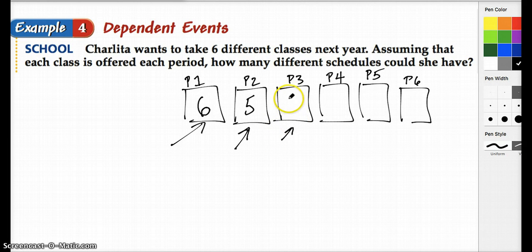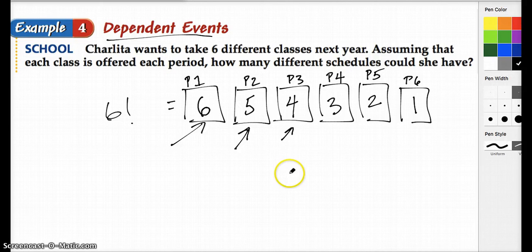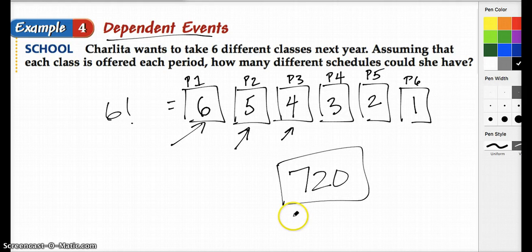And then for her third period choice, four classes, then three, then two, then one. So when we are choosing, when we have dependent events such that a choice will affect the number of possible outcomes the next time, we're going to have this kind of descending order thing: six times five times four times three times two times one, which we know can be written as six factorial. So six factorial, what is that, 720? So in this circumstance, she would have 720 different possible class choices.